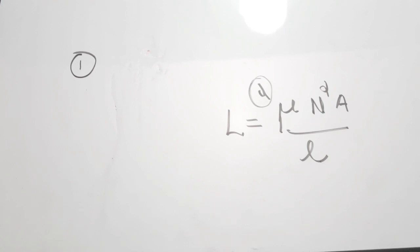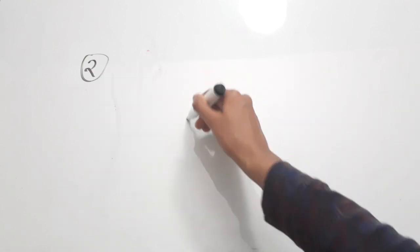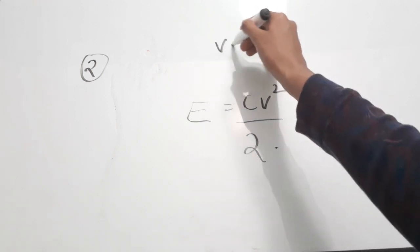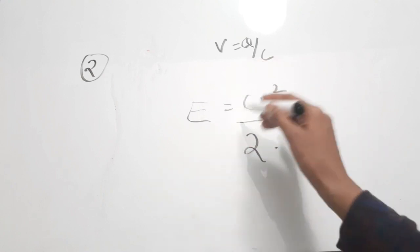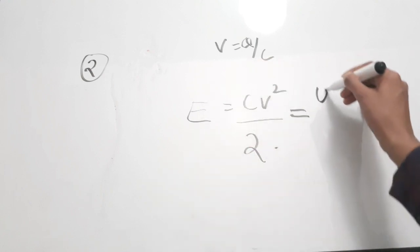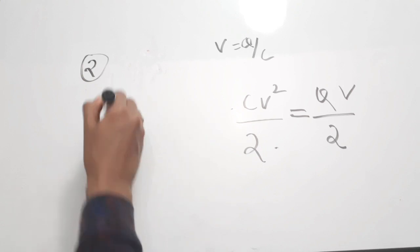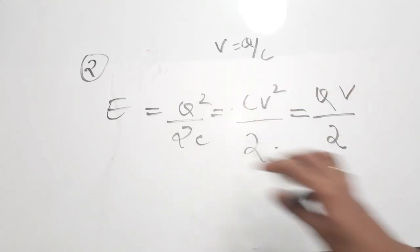Moving on to the second question: which of the following is not the equation for energy stored in a capacitor? I'll write the equations first. E = CV²/2, and if you substitute V = Q/C into this equation, you will get E = Q²/2C. Also, E = QV/2, which is again equal to Q²/2C.